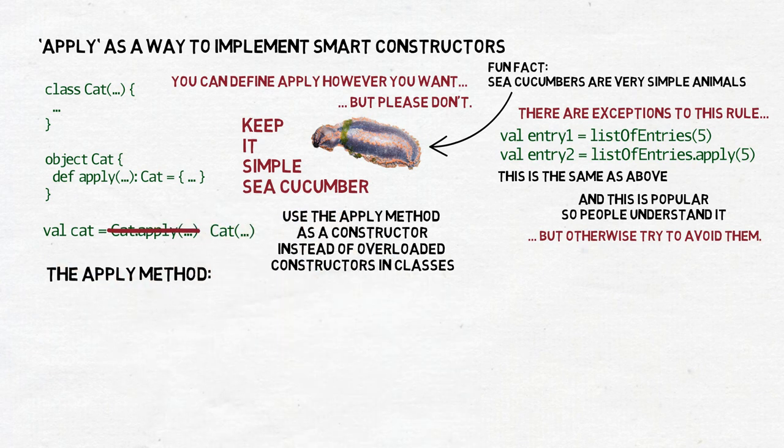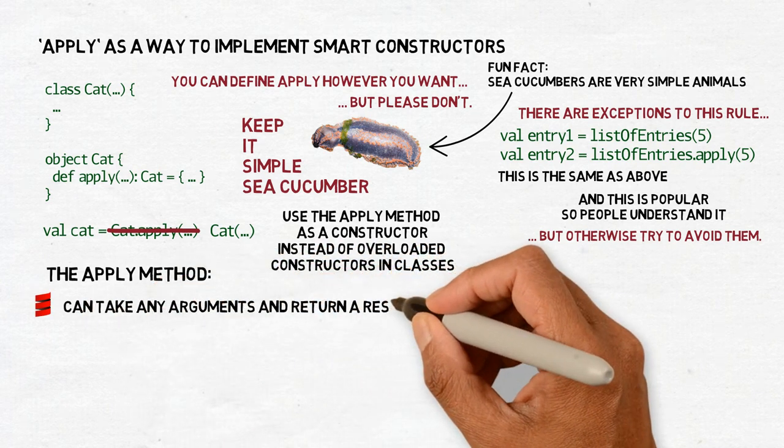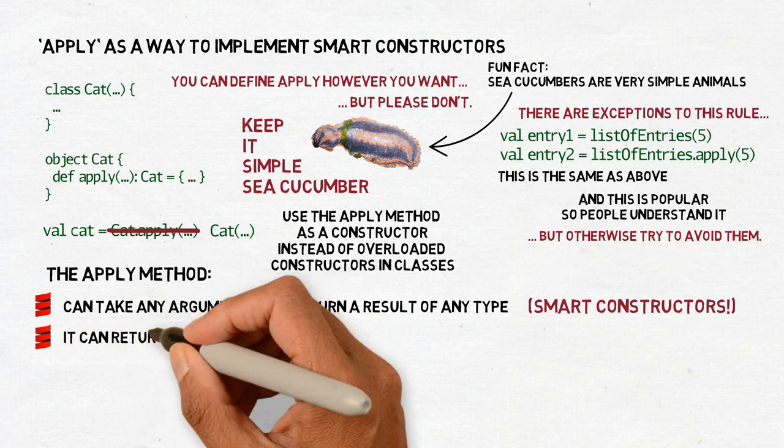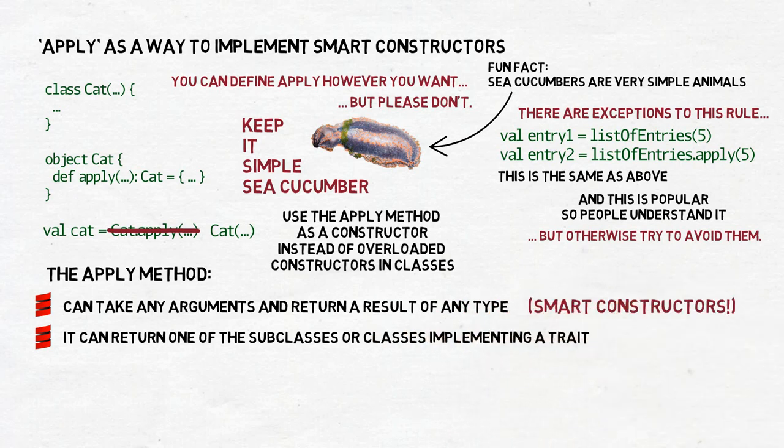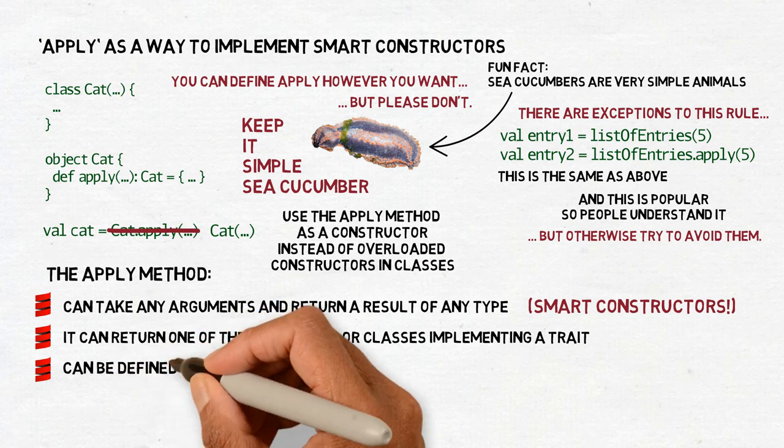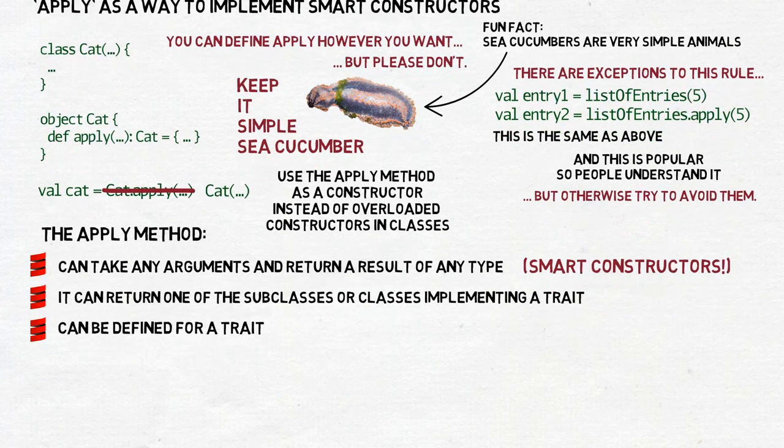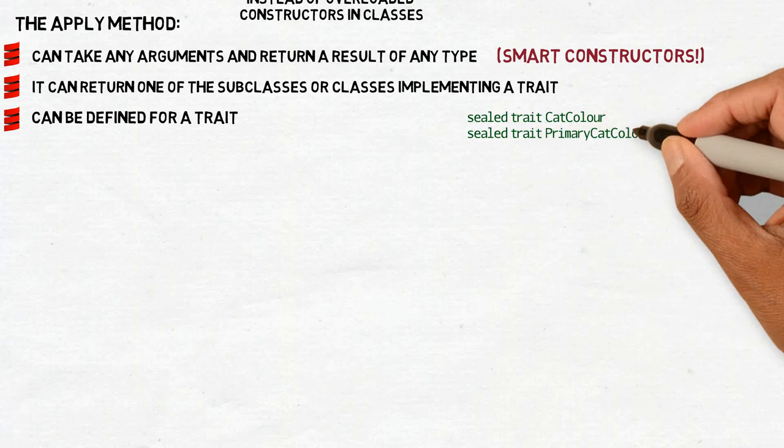But even when you stick to using apply as a constructor, you can still take advantage of the fact that it can take any arguments and return a result of any type. You can create a smart constructor this way. It's still a constructor, but it can do more. Depending on the arguments, it can return one of the subclasses or classes implementing a trait, which to the outside world will be known only as the entity of the superclass. The underlying logic is hidden.